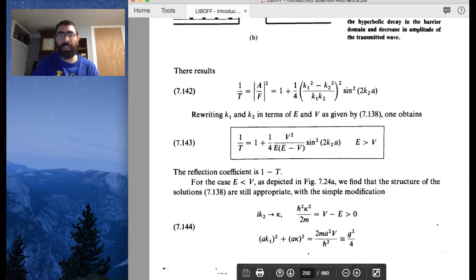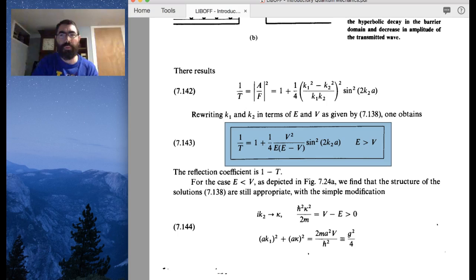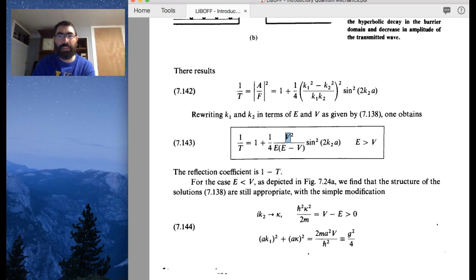So if I go to Liboff's book, where I left off in the previous video was that the 1 over the transmission probability can be written in terms of the potential height V, the total energy of the system E, and the width of the barrier A.